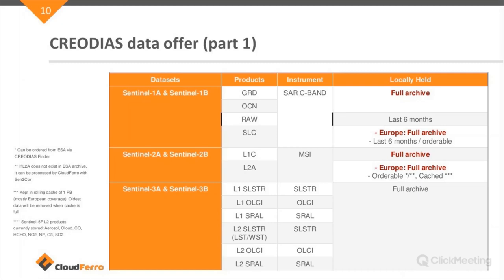We have available data from Sentinel-1A and B, Sentinel-2A and B, and Sentinel-3A and B — both optical and radar datasets. They are on different processing levels, so you can use processing level 1A, 1B, 2A, or 2B. You can also make use of raw data coming directly from satellites. Some customers use raw data, others use processed data, depending on the purposes of their work and familiarity with the data.